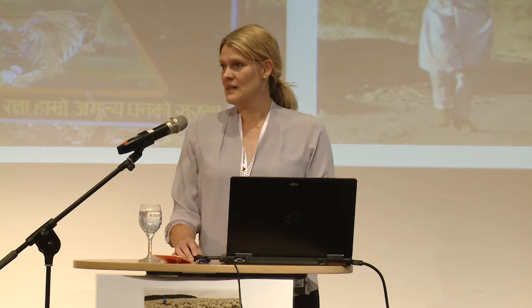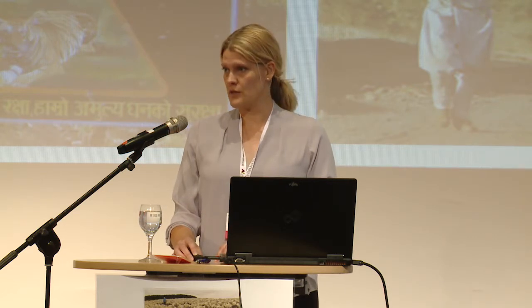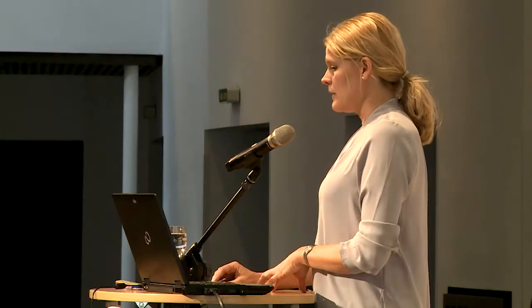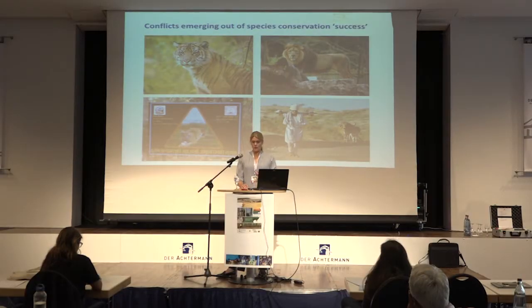Another serious issue in human-wildlife conflict is emerging conflicts where we have so-called successes — where species are naturally coming back, or we've managed to protect a species effectively. For example, tigers in Nepal: in Chitwan National Park there are now around 170 tigers, and this has caused a crisis of conflict around the park edges and buffer zones. Similarly with the Gir lion, that small population has grown, and the local population has to live with these lions. We have to anticipate these situations much better as we carry out species recovery work.